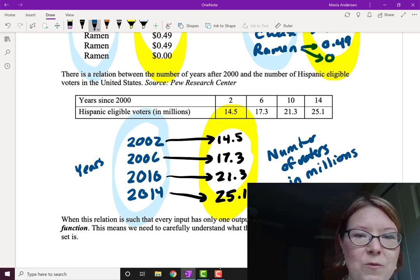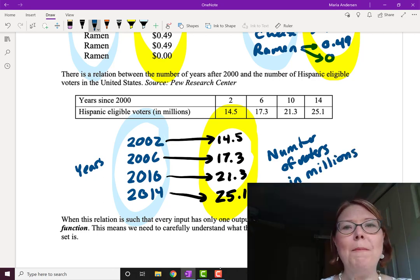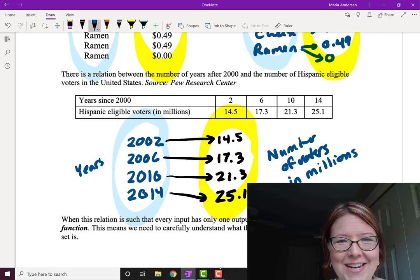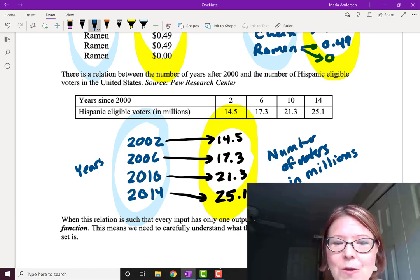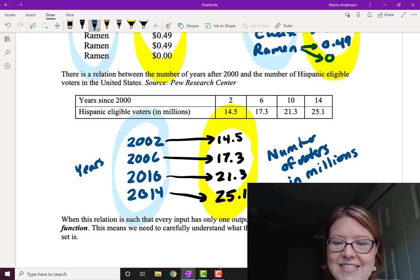So I think we understand relations now, and much of what we do in the world with numbers has to do with relations. What's important about a relation is that if we have the case where every input has only one output, then we call that relation a function. So we need to carefully understand what the input and output sets are.